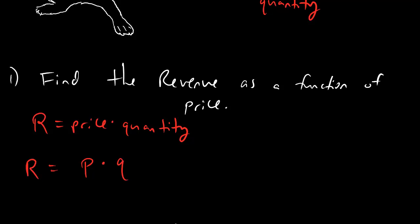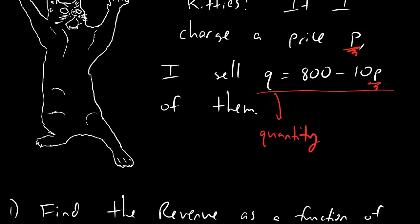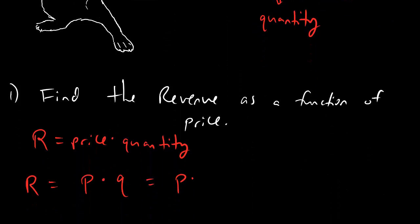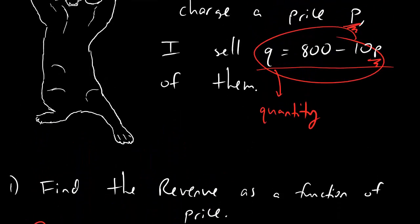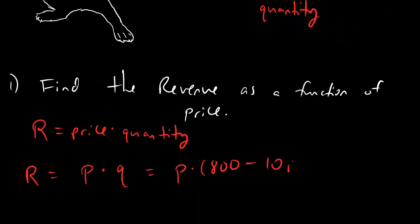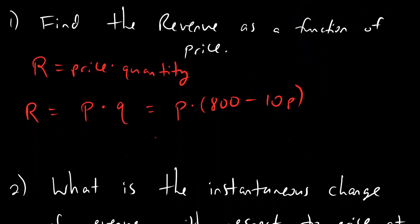We're going to say revenue equals price times quantity. Price stays price. For quantity, we're going to use this formula they hand us, 800 minus 10p. And then we can go ahead and distribute. So this is 800p minus 10p squared.